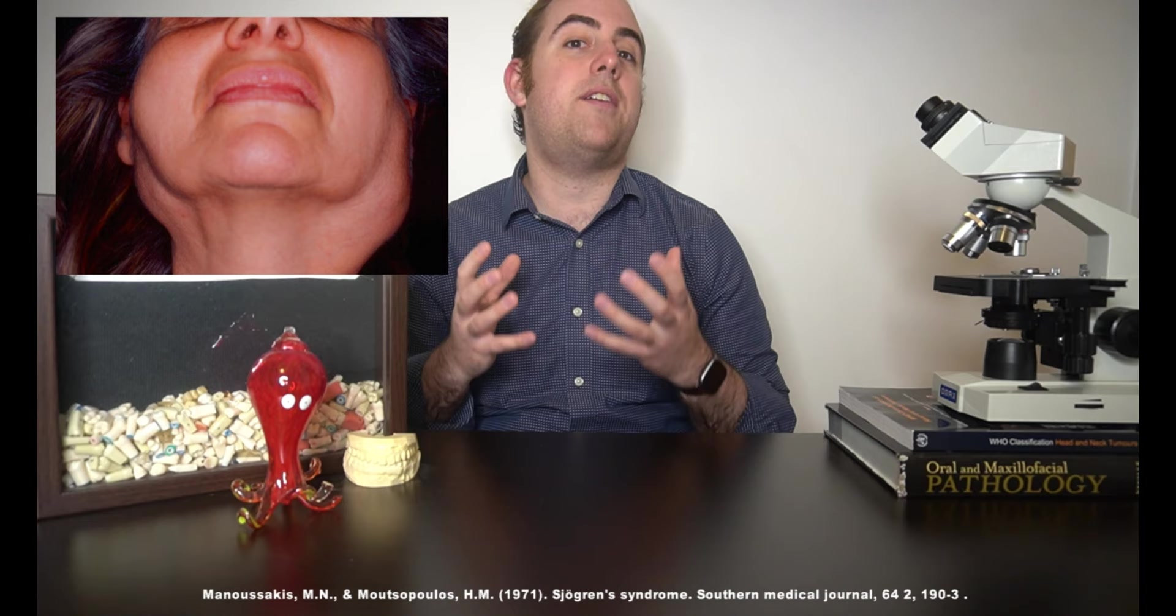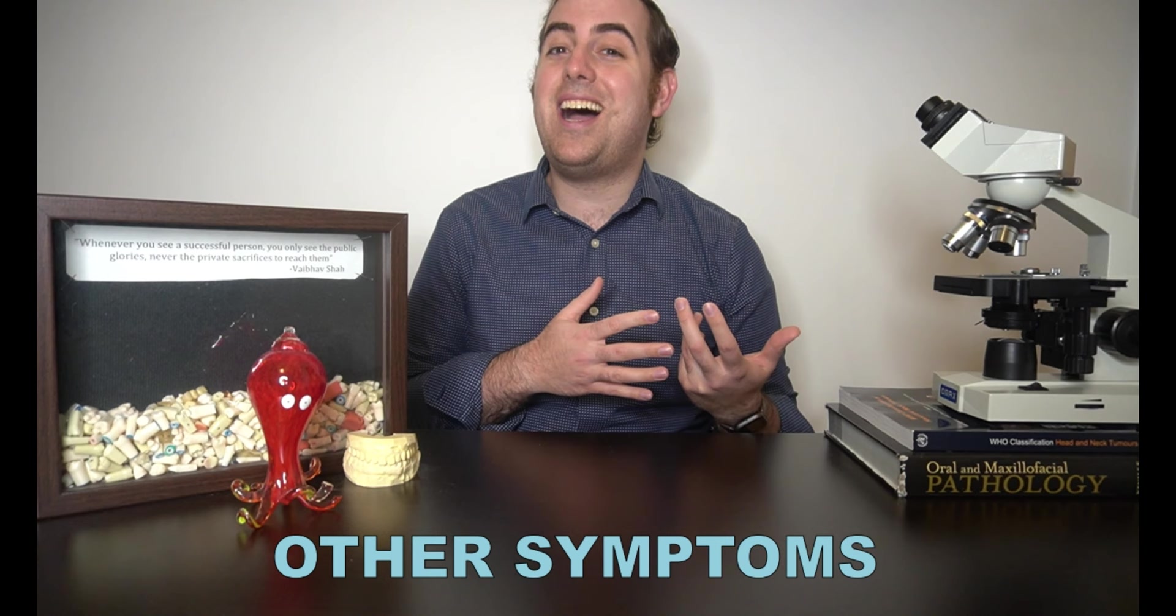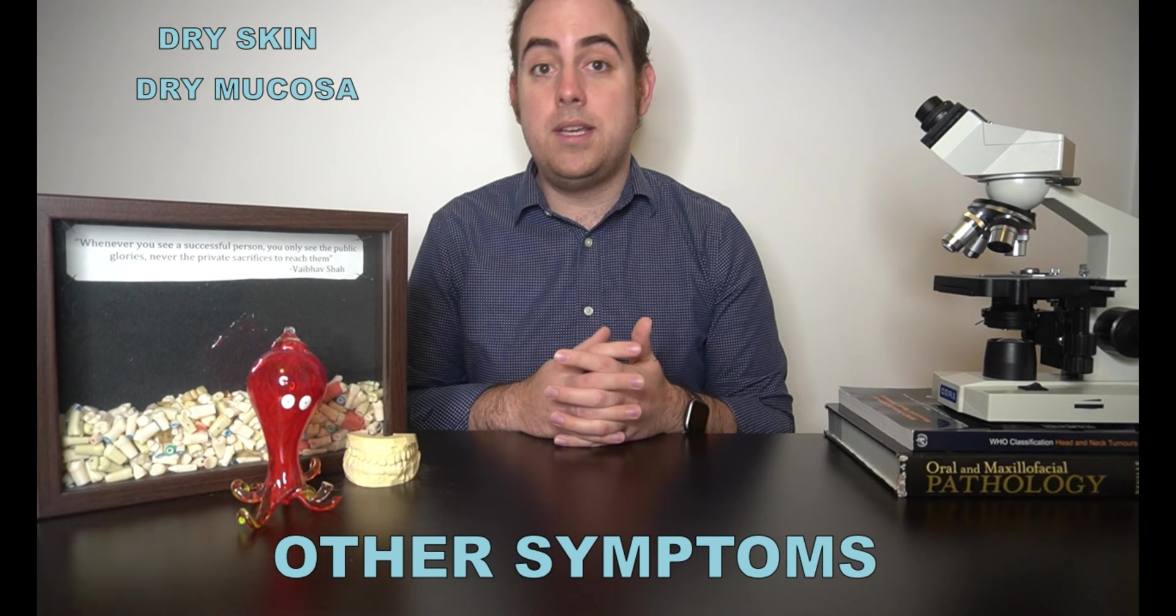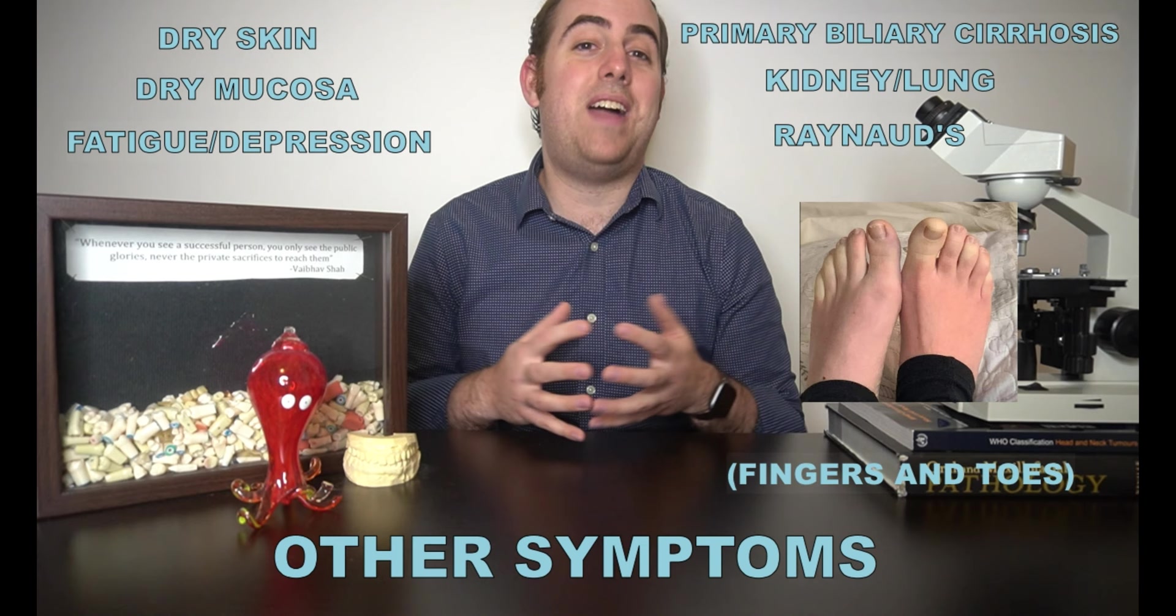Patients with Sjogren's syndrome may also present with a non-painful or perhaps slightly tender enlargement of the major salivary glands which is usually bilateral and occurs in approximately one-third to one-half of patients. Other symptoms of Sjogren's syndrome outside of dry eyes and dry mouth include dry skin, dry nasal and vaginal mucosa, fatigue and depression, primary biliary cirrhosis, kidney and lung involvement, and Raynaud's which is changing of the fingers as well as many other vascular nerve issues.